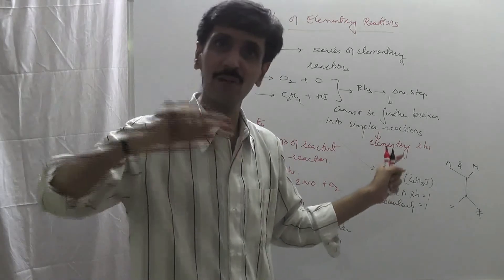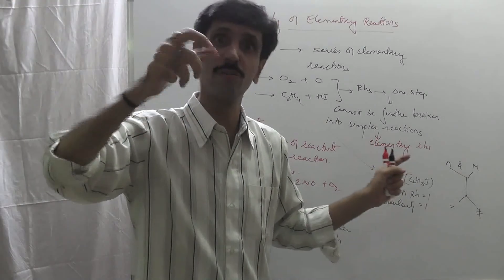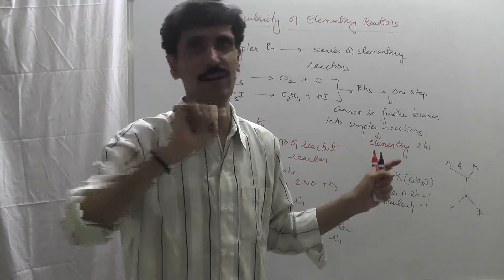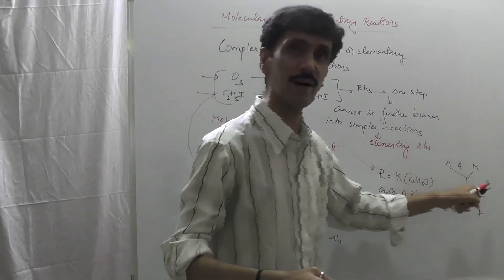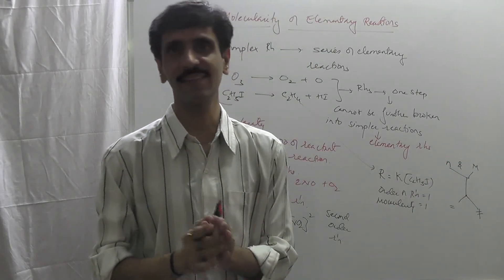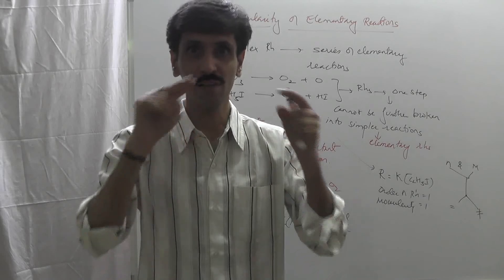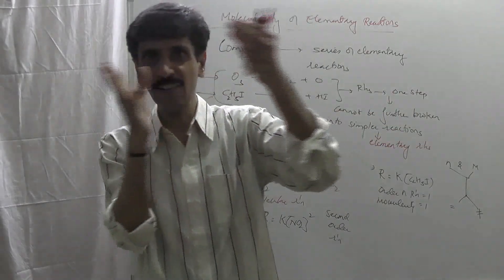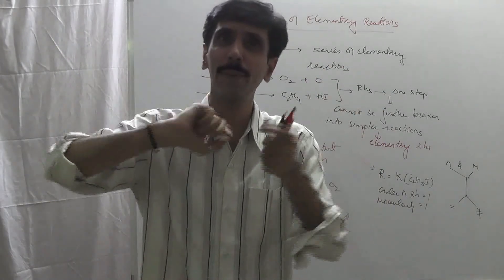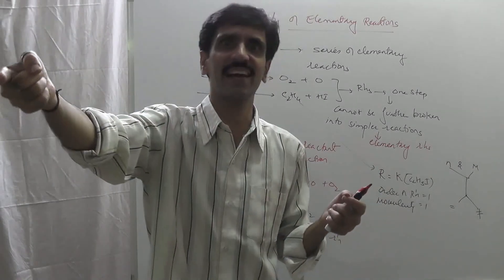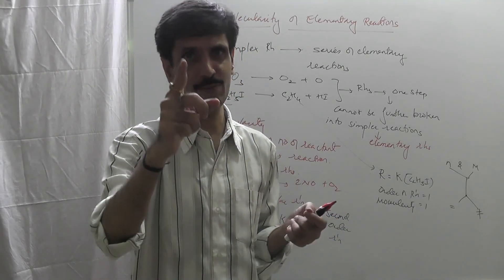The power of the concentration of reactants gives us the order, and the stoichiometric coefficient gives us the molecularity. So order and molecularity are sometimes the same, but sometimes they are different. The simple way to put it is: order is experimental and molecularity is theoretical. This is the clear distinction between order and molecularity.